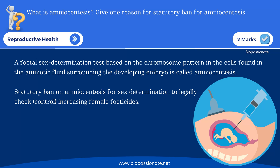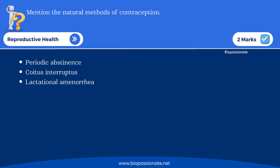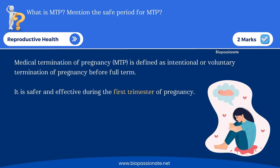The first question is about amniocentesis for two marks: what is amniocentesis and give one reason for the statutory ban. Amniocentesis is a fetal sex determination test based on the chromosome pattern in cells found in the amniotic fluid surrounding the developing embryo. It is banned to prevent misuse for female fetus sex selection. Also mention the natural methods of contraception: periodic abstinence, coitus interruptus, and lactational amenorrhea.